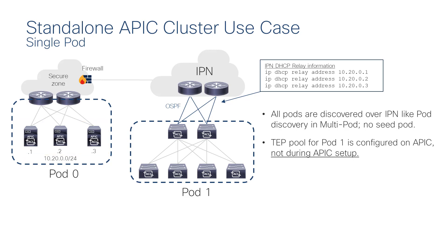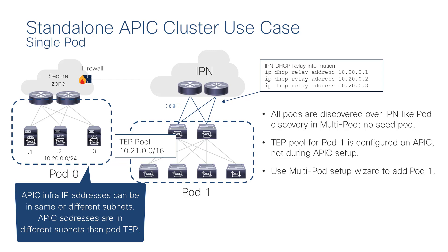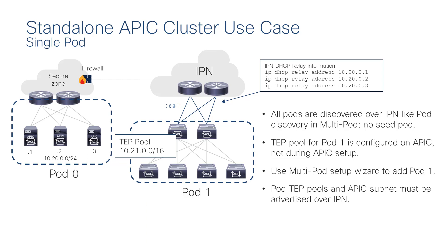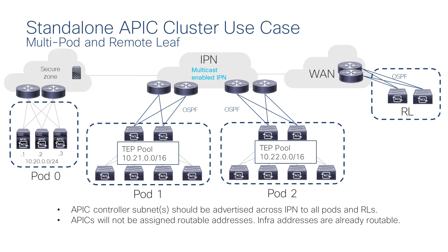The TEP pool for pod 1 is configured from the APIC UI after the cluster is brought up. Even for a single pod fabric, we still must configure a multipod infra L3out so the spines in pod 1 can reach the APICs remote from the fabric. The TEP pools for pod 1, as well as the APIC pod 0, must be advertised within the IPN. There is no change in the configuration when adding additional pods for multipod or remote leaf switches with the Standalone APIC cluster. The only difference is the APICs will not be assigned routable addresses for remote leaf connectivity, because the IP addresses configured during setup are already routable in the IPN.